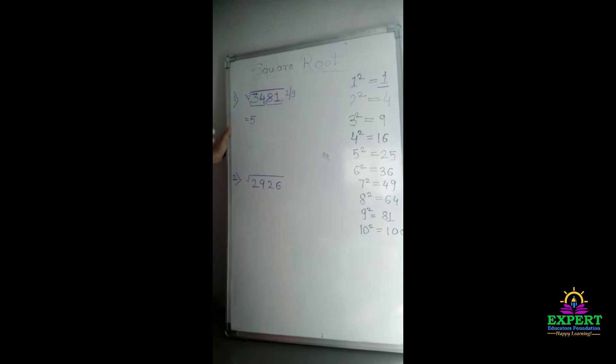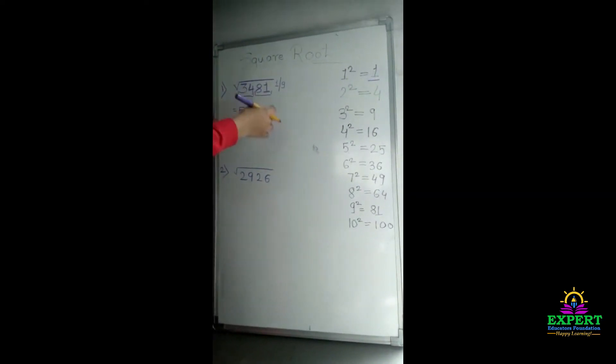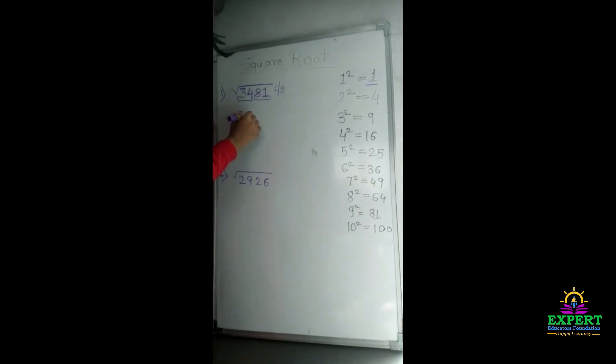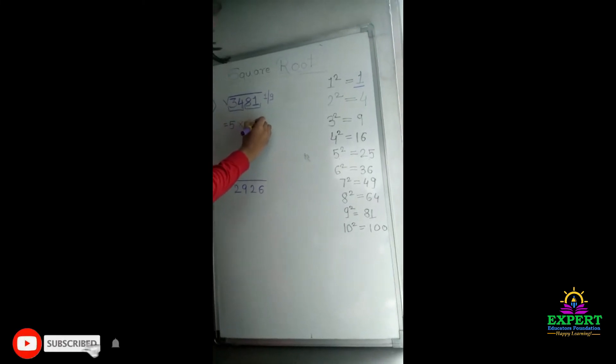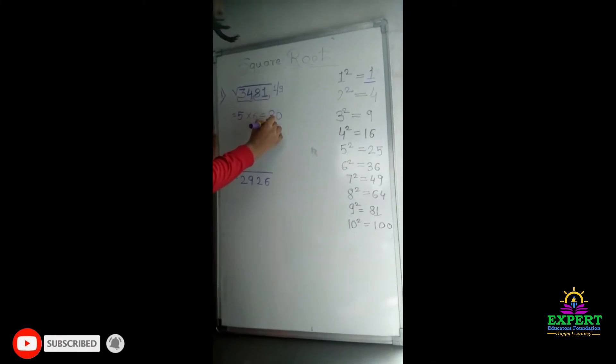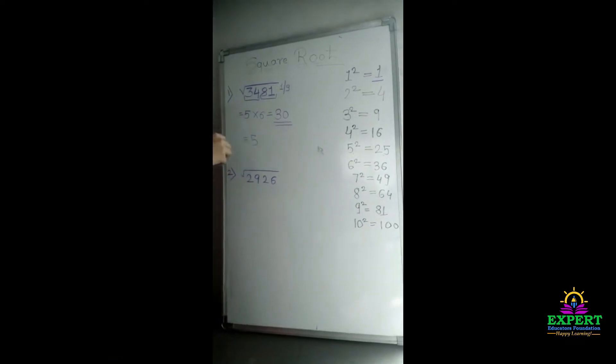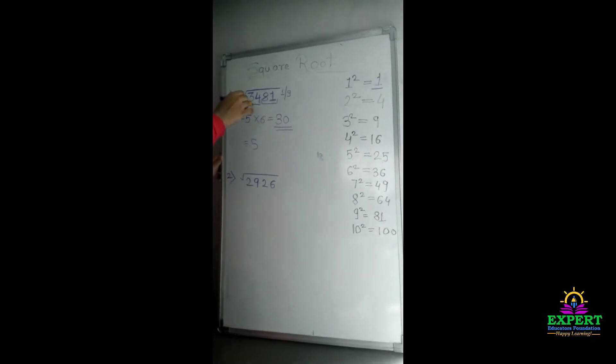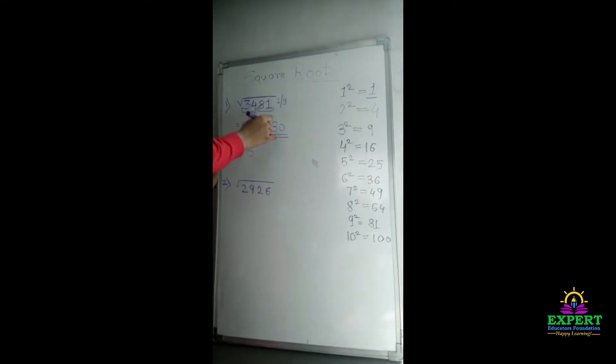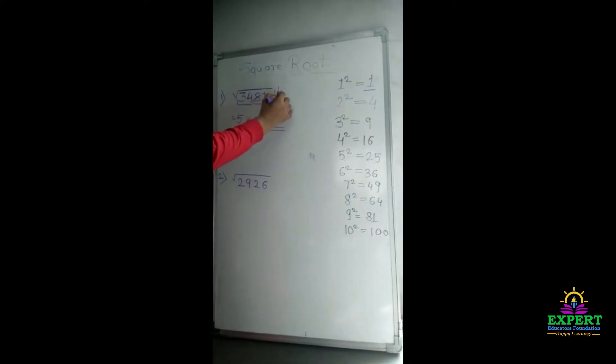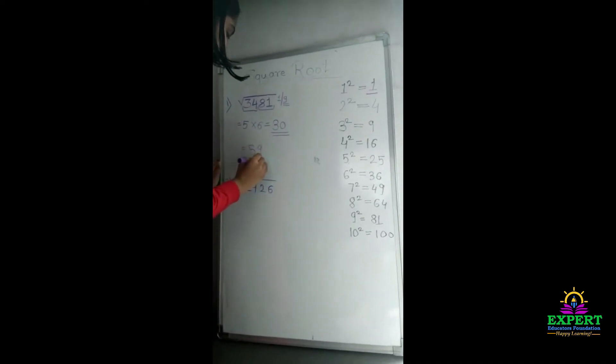Next, now we will multiply 5 by its next number, means 6. So, 5, 6, 5, 6 are 30. We have got 30. After that, we will see 34 is bigger than our product, so 34 is bigger, so we will take bigger number which is 9, so here is our answer 59.